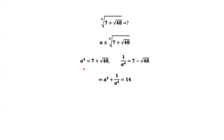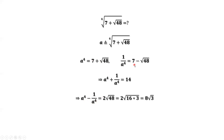We can do a similar thing: take the first equation minus the second equation. The left-hand side is A to the power of 4 minus 1 over A to the power of 4. On the right-hand side, 7 minus 7 is 0, and square root of 48 minus negative square root of 48 equals 2 times square root of 48. Since square root of 48 equals square root of 16 times 3, this implies A to the power of 4 minus 1 over A to the power of 4 equals 8 times square root of 3.